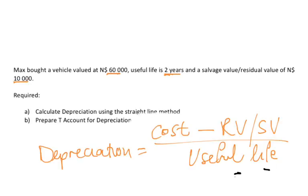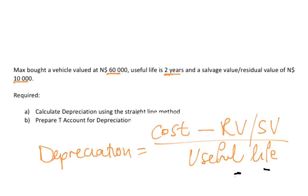For year 1, we have the cost of $60,000 minus the residual value of $10,000. So $60,000 minus $10,000 over 2 years gives you $25,000.